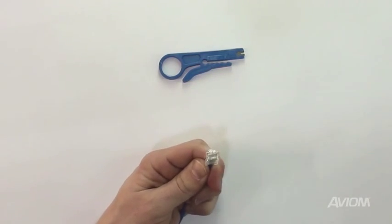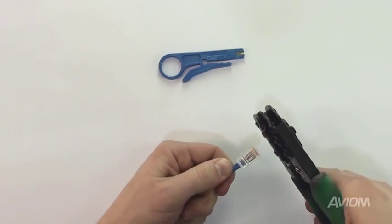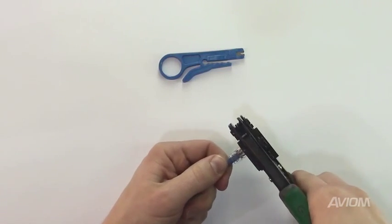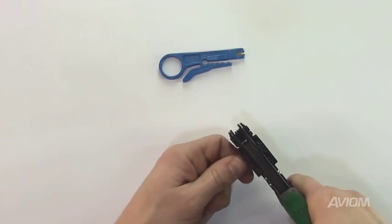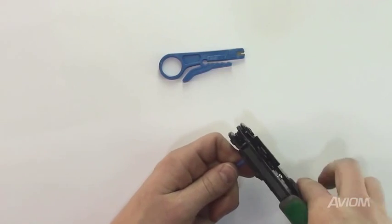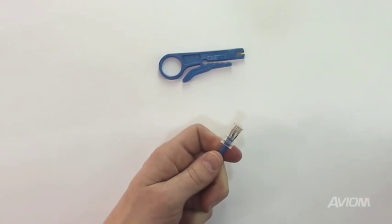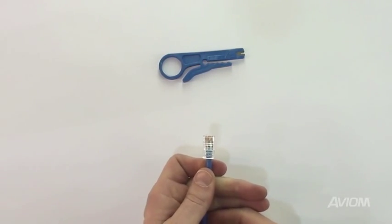Verify that the strain relief on the RJ45 connector is above the outer jacket of the wire. Insert the RJ45 into the crimper and squeeze the crimper fully. Verify again that the wires are in the proper order and that they have seated properly in the connector.